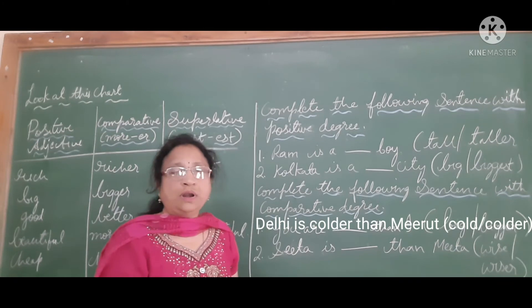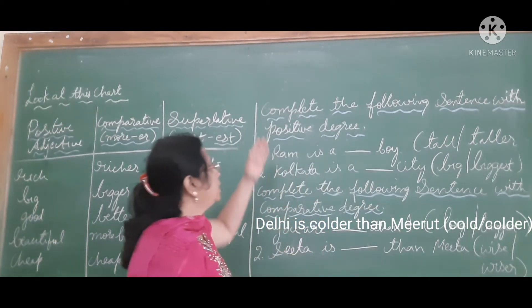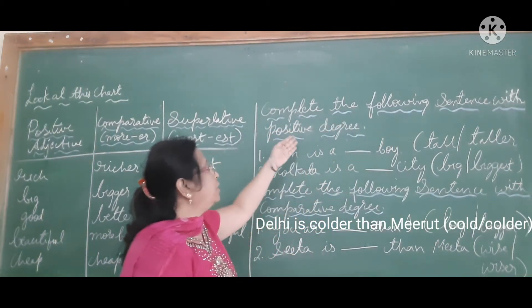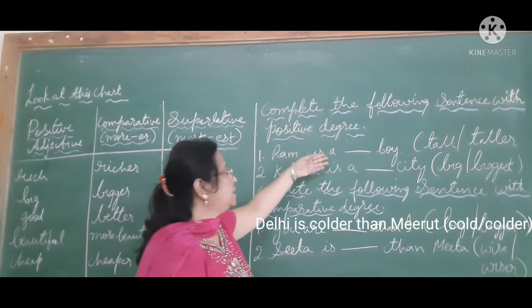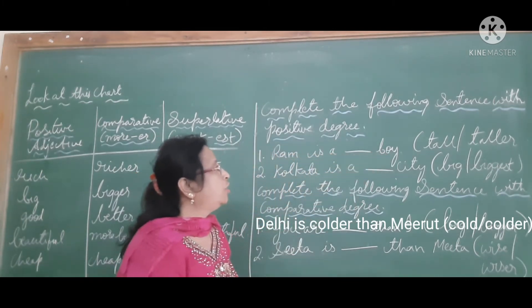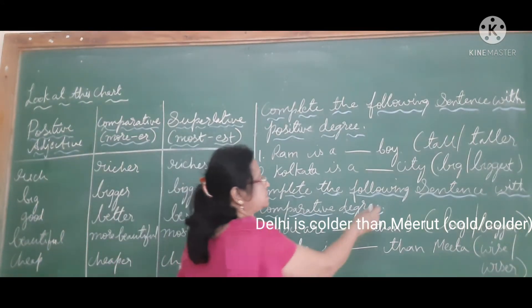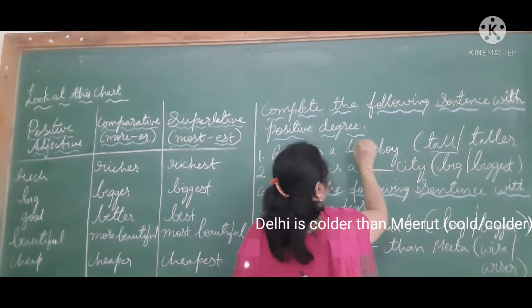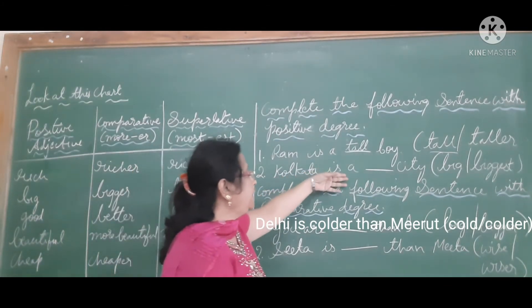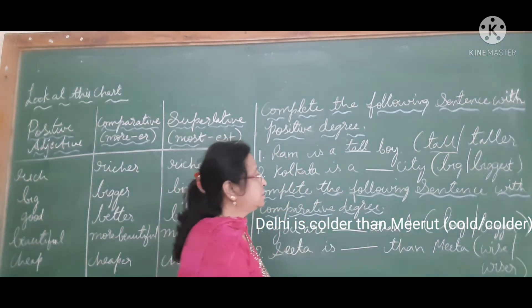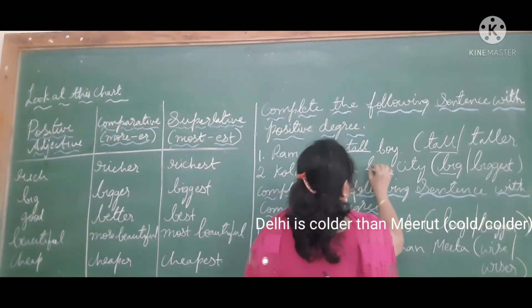Now let us do a small exercise to understand the degrees of adjectives better. Complete the following sentence with the positive degree. First sentence: Ra is a dash boy — Ra is a dash boy. We are not comparing with any other noun or pronoun. The answer is tall. Second sentence: Kolkata is a dash city. We are not comparing — it is a big city.